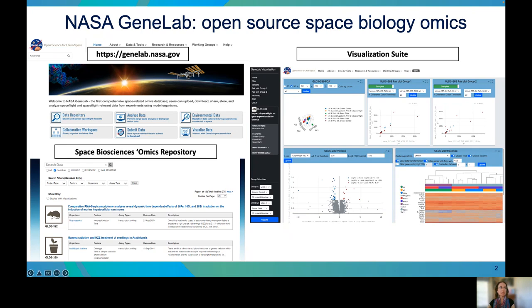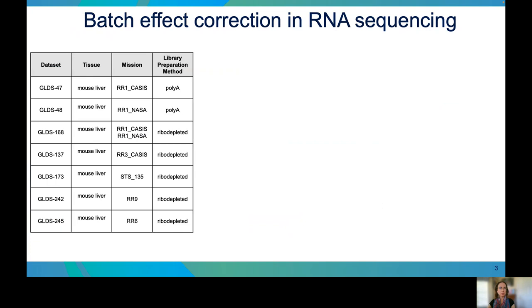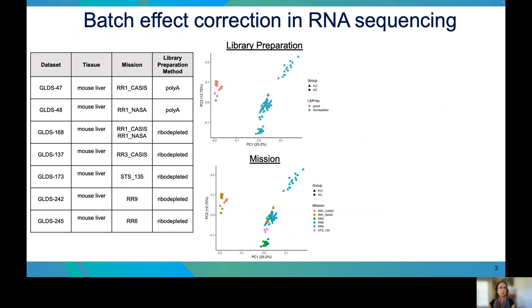Our current work focuses on understanding and mitigating technical batch effects in a specific type of space omics data, RNA sequencing. To better understand the presence of batch effects in space biological RNA sequencing data, we combined seven GeneLab RNA sequencing datasets from space-flown and ground-controlled mouse liver. These datasets come from experiments flown on several different flight missions, and the RNA sequencing libraries were prepared with two different library preparation methods, polyadenylation and ribodepletion. We highlight these two technical factors because after a review of PCA plots, we found that they contribute most strongly to batch effects in the combined datasets.